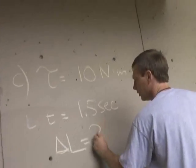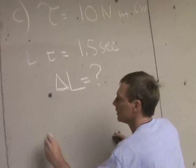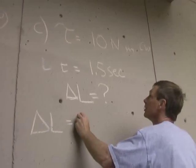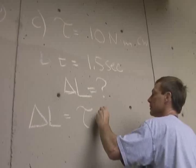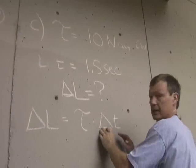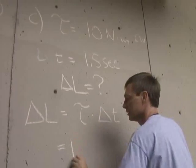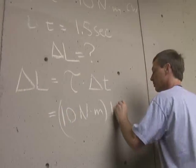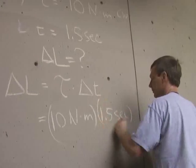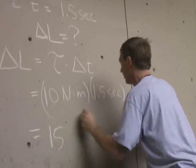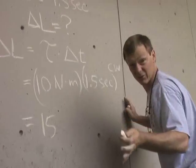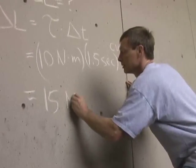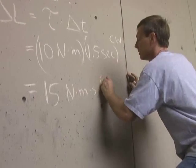Delta L equals question mark. The change in angular momentum is equal to the torque times the time, which is going to be 10 newton meters times 1.5 seconds. That's clockwise — don't forget, this is a vector, not a scalar — which gives us 15 newton meter seconds clockwise.